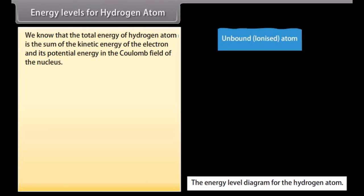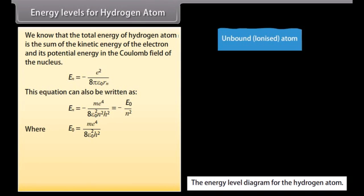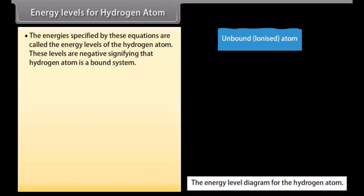Energy levels for hydrogen atom. We know that the total energy of hydrogen atom is the sum of the kinetic energy of the electron and its potential energy in the Coulomb field of the nucleus. En equals minus E square upon 8 pi epsilon not RN. This equation can also be written as En equals minus M E raised to the power 4 divided by 8 epsilon not square N square H square where E not is equal to M E raised to the power 4 divided by 8 epsilon not square H square. En equals 2.2 into 10 raised to the power minus 18 joule which is equal to 13.6 electrovolt. The above equation can also be written as En equals minus 13.6 upon N square electrovolt. The energies specified by these equations are the energy levels of the hydrogen atom.